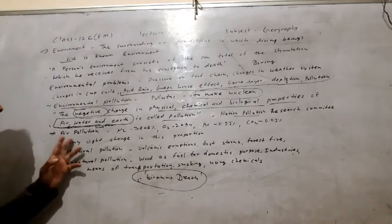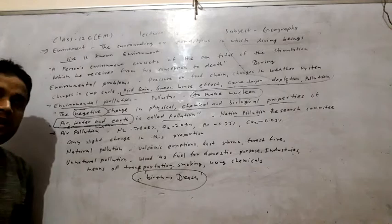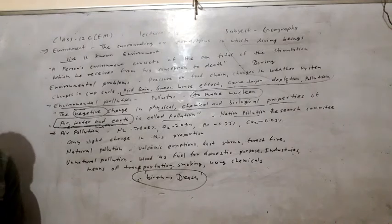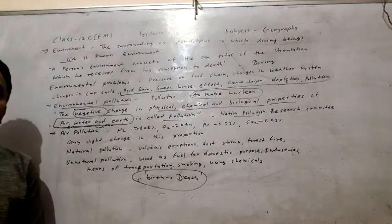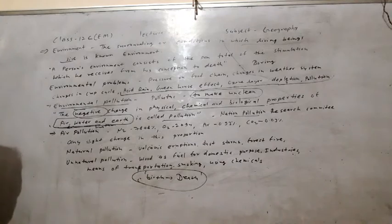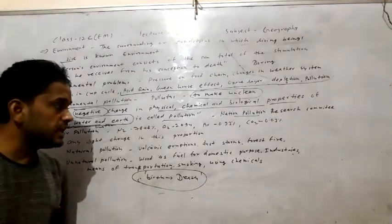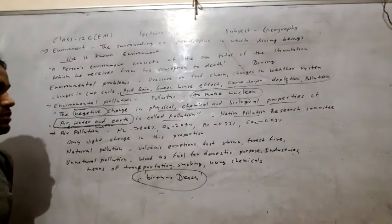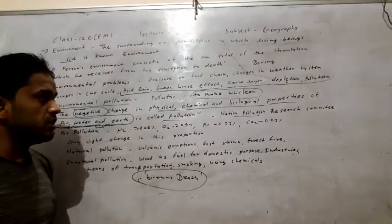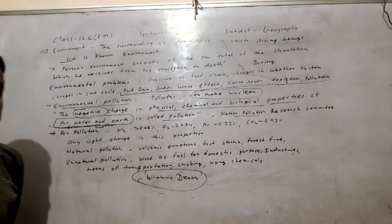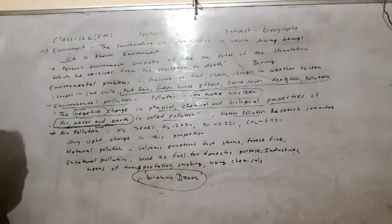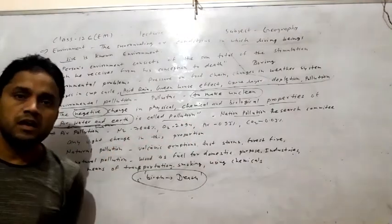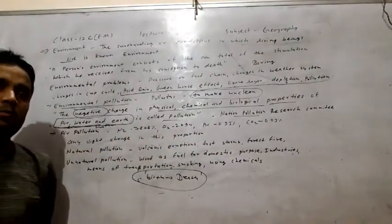First, we discuss air pollution. Negative changes in the air occur in the atmosphere, where the proportion of many gases is fixed. Nitrogen is found at 78.08%, oxygen at 20.94%, argon at 0.93%, and CO2 (carbon dioxide) at 0.003%. Any changes in this proportion are included in air pollution.